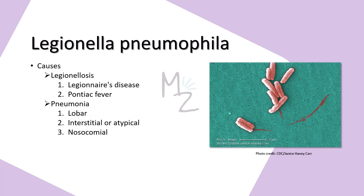Legionella pneumophila is responsible for causing pneumonia, as its name shows — 'pneumophila' indicates pneumonia. It causes three different types of pneumonia: lobar pneumonia (in one of the lobes of the lung), interstitial or atypical pneumonia, and nosocomial pneumonia (nosocomial meaning hospital-acquired). You can memorize the diseases caused by Legionella with its name: 'Legionella' relates to Legionellosis, which has two categories — Legionnaires' disease and Pontiac fever — and 'pneumophila' relates to the three kinds of pneumonia.